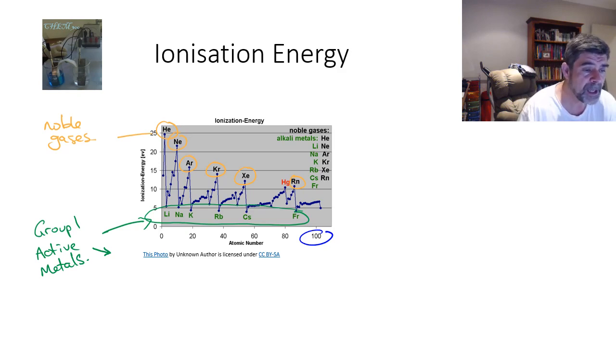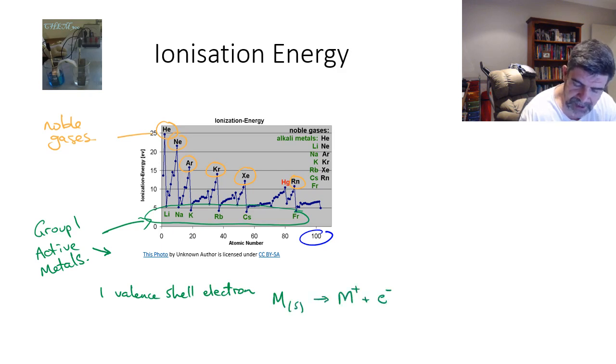The biggest problem, of course, we have is that we have a single valence shell electron. And therefore, what's happening in each of these cases is that the metal is losing that electron to become a metal ion. Of course, in ionisation energy, we'll look at this happening with the gases.